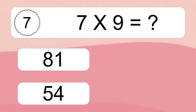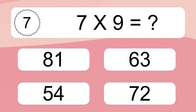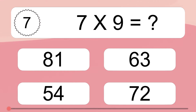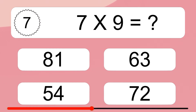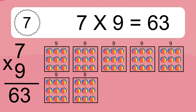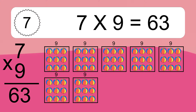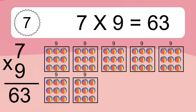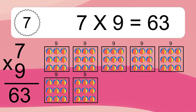7 times 9 equals what? 7 times 9 equals 63. We have 7 boxes, and each box has 9 colorful balls inside. If you count all the balls in all the boxes together, you will have 7 times 9 balls. This equals 63 balls.